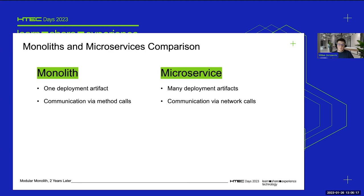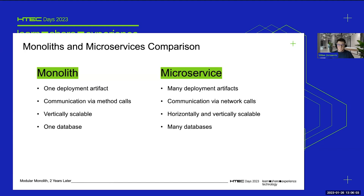With microservices you have to resort to network calls — either via HTTPS or gRPC — to talk with other services. When it comes to scalability, the monolith can be scaled vertically, while microservices can be scaled both horizontally and vertically. Yes, you can create more instances of a monolith, but the problem is you would end up scaling your entire system — whereas usually there's one bottleneck part you want to scale out. For databases, a monolith typically has one database, while microservices have one database per service, so you end up with a lot of databases to maintain.